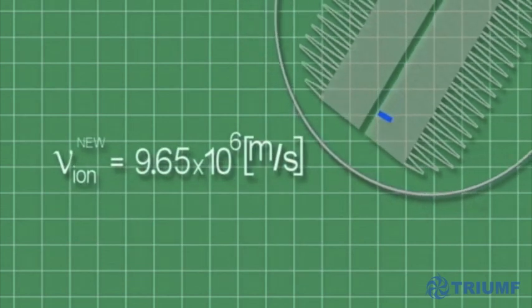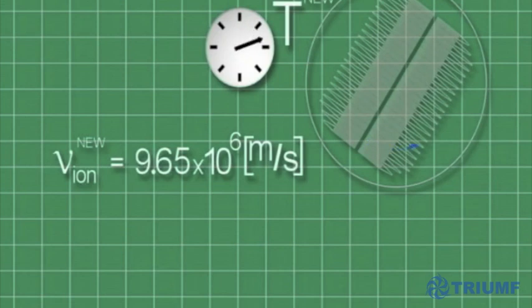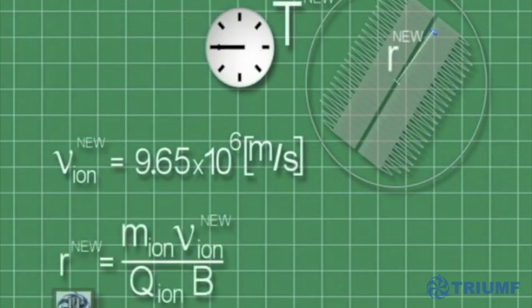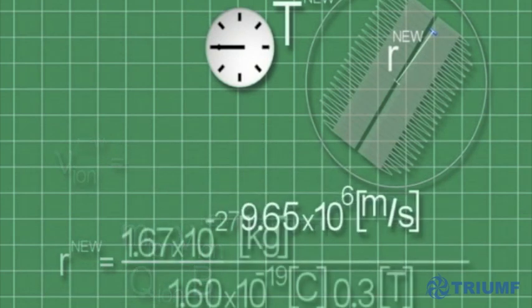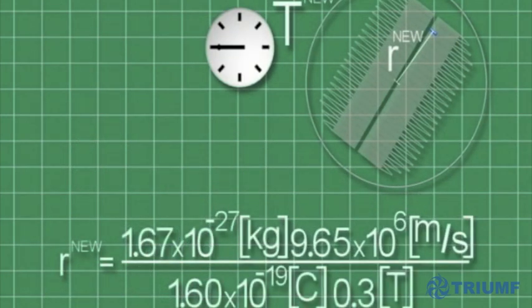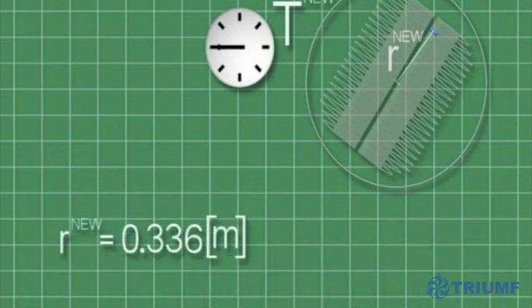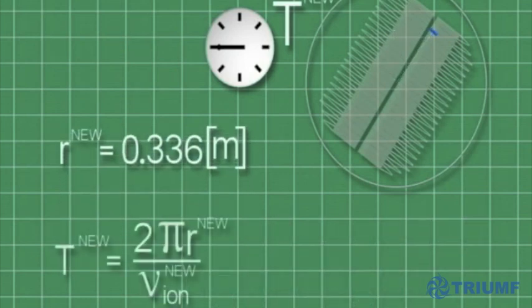Now let's calculate the new radius and orbital period. Let's first calculate the radius by substituting in the known values for the ion's mass, its new velocity, its charge, and the cyclotron magnetic field. Now using the new radius and the new velocity, let's calculate the new orbital period.